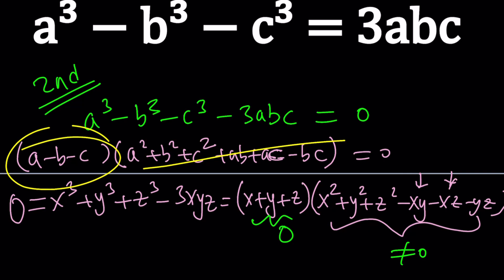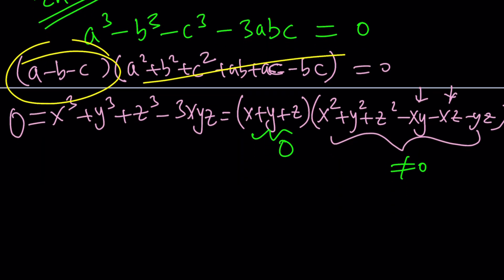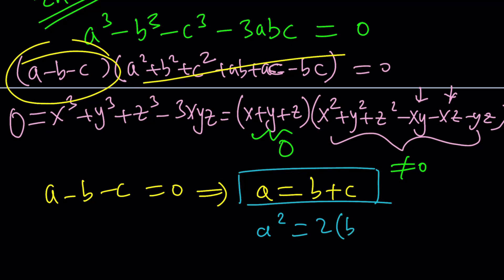And again, it doesn't matter because this expression cannot be zero. This has to be zero. And it's beautiful because that gives us a lot of information. A minus b minus c equals zero means a is equal to b plus c. Now, this is valuable because if you look at the system, the first equation gave us a squared equals two times the quantity b plus c.